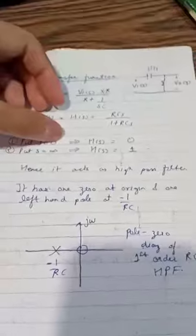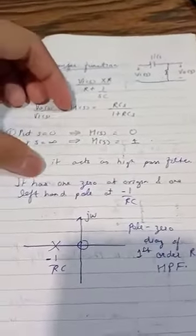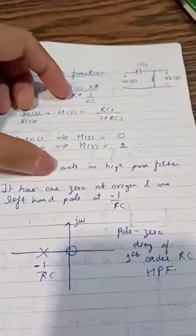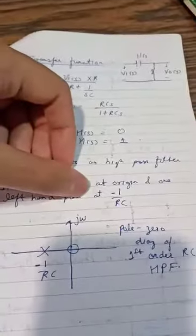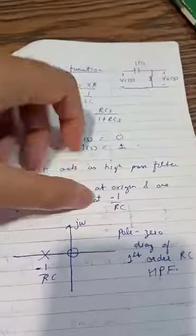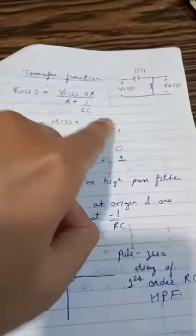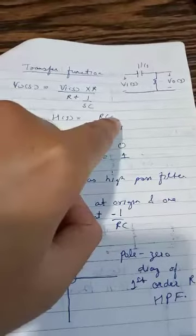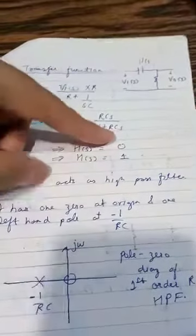It has one zero at origin and one left hand pole at minus 1 by RC. There is one zero at origin because of one s term, and there is one left hand pole because of this 1 plus RCS.